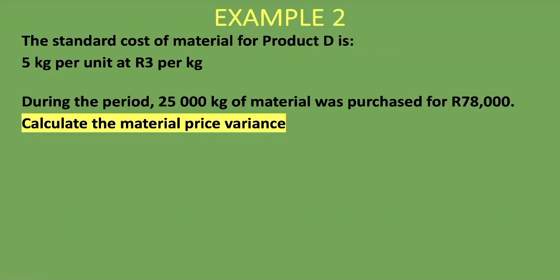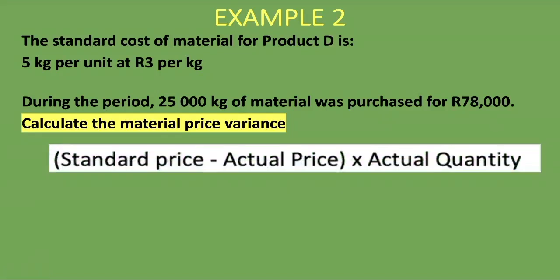Let's look at one more example. The standard cost of material for Product D is 5 kg per unit at 3 rand per kg. During the period, 25,000 kg of material was purchased for 78,000 rand. We are asked to calculate the material price variance. The formula is the same: standard price minus actual price, multiplied by actual quantity. Our standard price is 3 rand per kg.